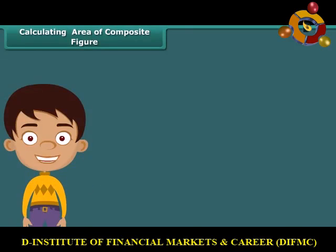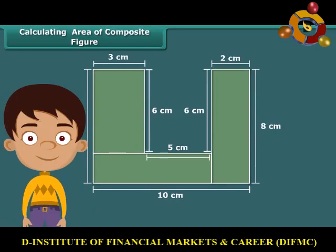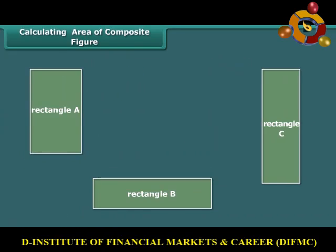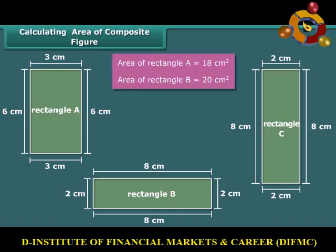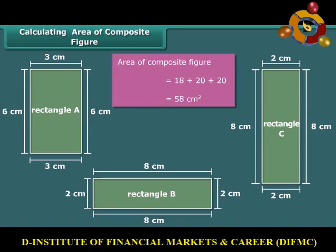Now let us calculate the area of a shape made up of multiple rectangles. First, break the composite figure into individual rectangles. Calculate the area of each rectangle, then sum up all the areas to find the area of the composite figure. Here we divide the given composite figure into 3 rectangles: area of rectangle A is 18 cm square, and areas of rectangles B and C are the same, that is 20 cm square each. Thus, the area of the composite figure is 18 plus 20 plus 20, which equals 58 cm square.